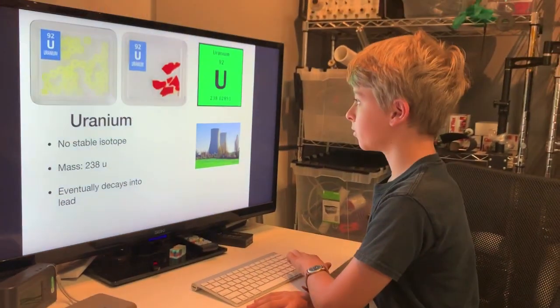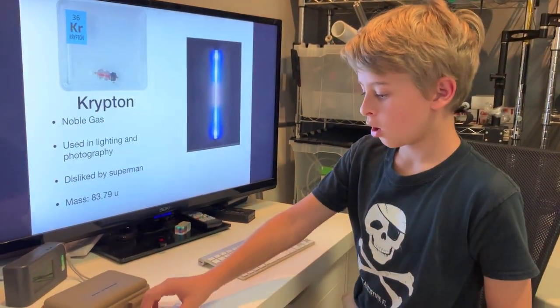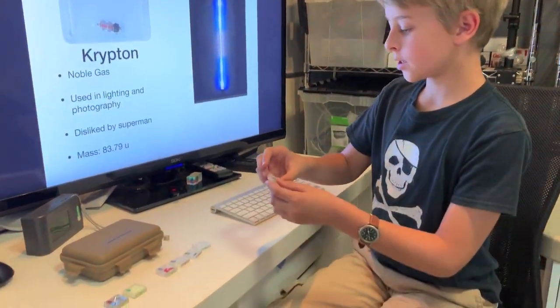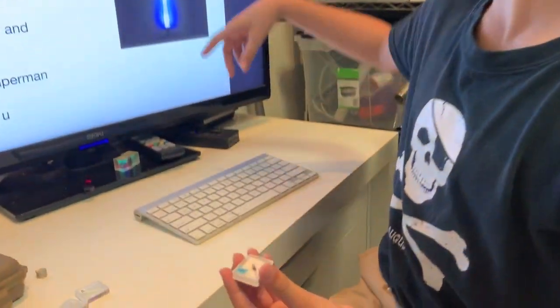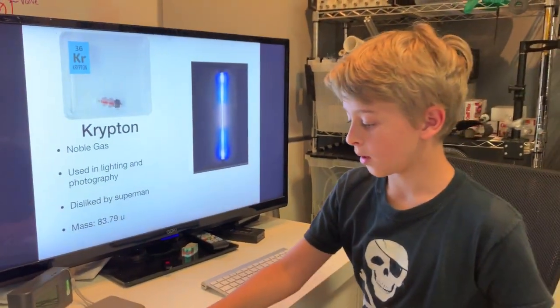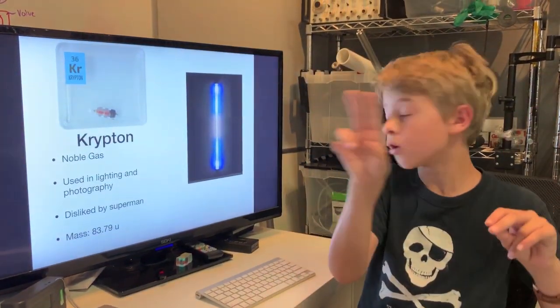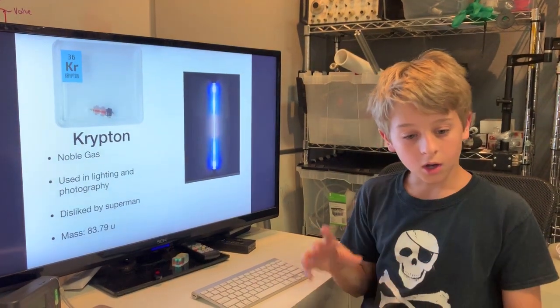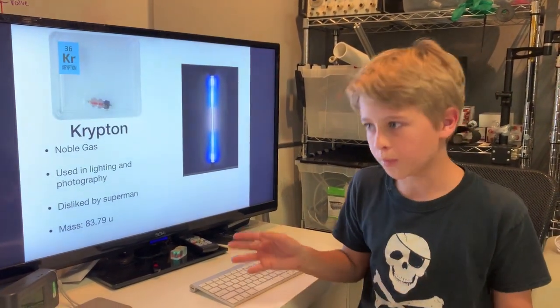Next we have krypton, which is actually not radioactive but is used in gas light bulbs. It is very good at that since it keeps the tungsten filament cooler so the light bulb lasts longer.